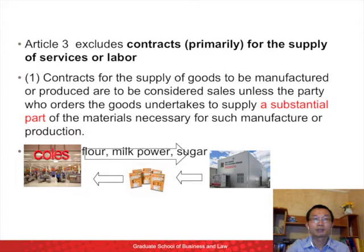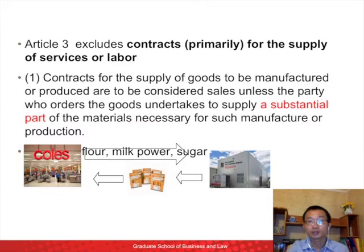For example, Kohl's orders biscuits from a New Zealand manufacturer. At the same time, Kohl's provides the essential ingredients like flour, milk powder, and sugar. Then such a contract is not governed by the Convention.